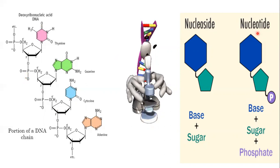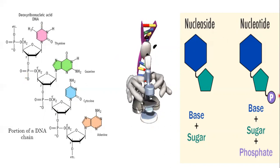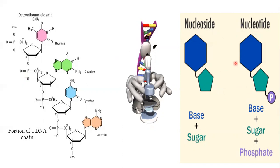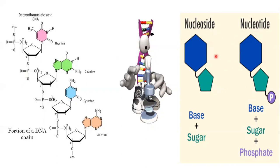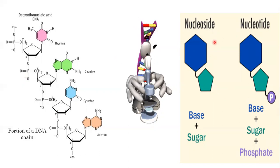DNA is a long chain of nucleotides. Notice the difference between a nucleotide and a nucleoside — both are exactly the same except for the phosphate group. If we add the phosphate group to the nucleoside, the nucleoside becomes a nucleotide. Four different types of nitrogenous bases give four different nucleosides, such as adenosine, guanosine, etc.